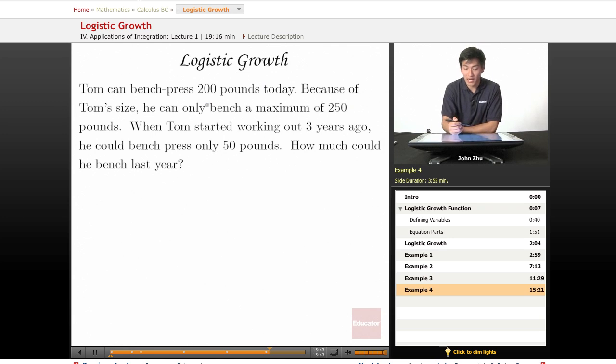So Tom can bench press 200 pounds today. So at t equals some value, p of that t value equals 200. And because of his size, he can only bench a maximum of 250 pounds. So right away, we know that k equals 250.